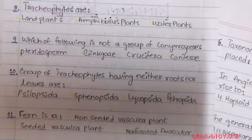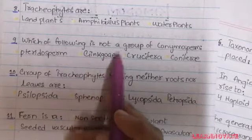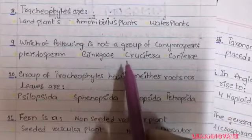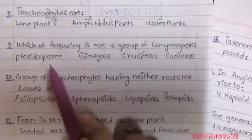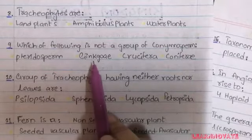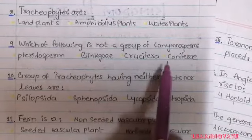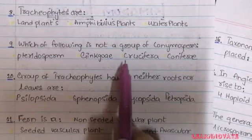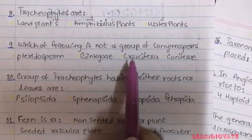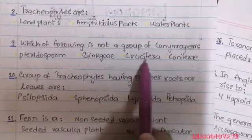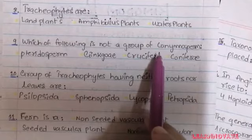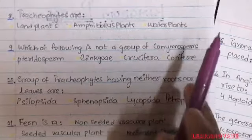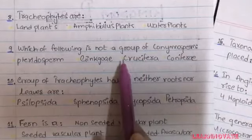Question 9: Which of the following is NOT a group of gymnosperm? A. Pteridosperm, B. Ginkgo, C. Crucifera, D. Conifera. The answer is C — Crucifera is not a group of gymnosperm; it is not an example of gymnosperm. So option C for question number 9 is correct.